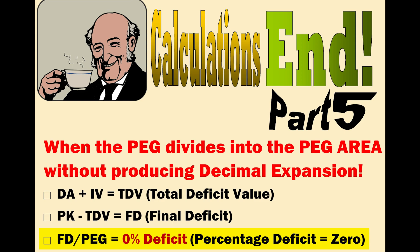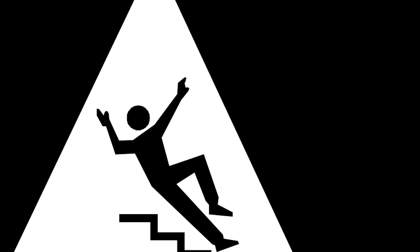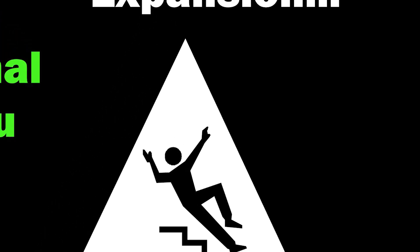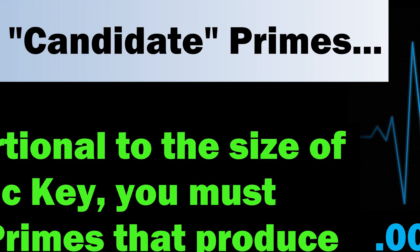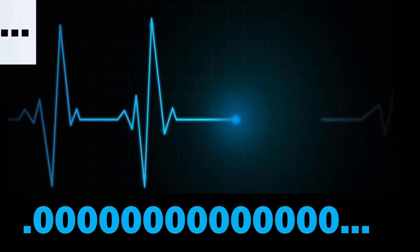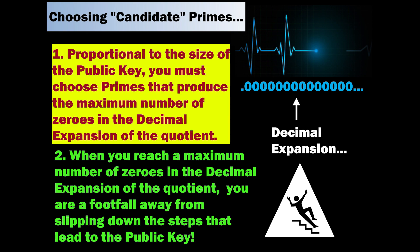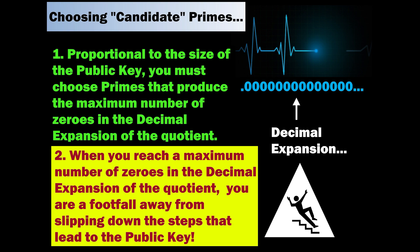The percentage deficit will help you choose better candidate primes. But before you do any of these calculations, you must know that you will not choose every prime. Instead, there is a method to choosing candidate primes. First, proportional to the size of the public key, you must choose primes that produce the maximum number of zeros in the decimal expansion of the quotient. Second, when you reach a maximum number of zeros in the decimal expansion of the quotient, you are a foot four away from slipping down the steps that lead to the public key.